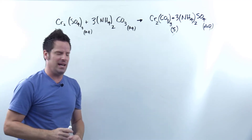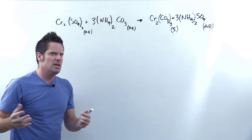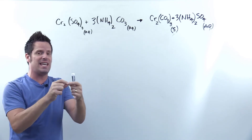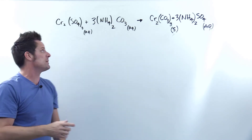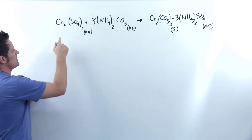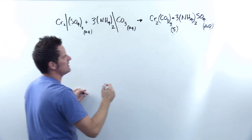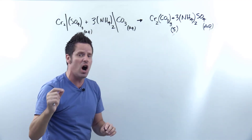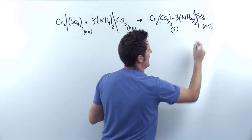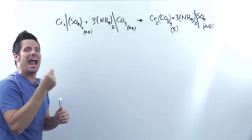The next step is: for everything with an AQ label, you cut it in half — separating the cations from the anions. The reason is that AQ means the compound dissolves in water, and when ionic compounds dissolve, the cations and anions separate from each other. For example, chromium sulfate is aqueous — when thrown in water, the chromium and sulfate part ways. So I draw a line separating chromium from sulfate. Over here, NH4 separates from carbonate. Chromium carbonate is a solid, so it does not get cut in half — it stays intact.